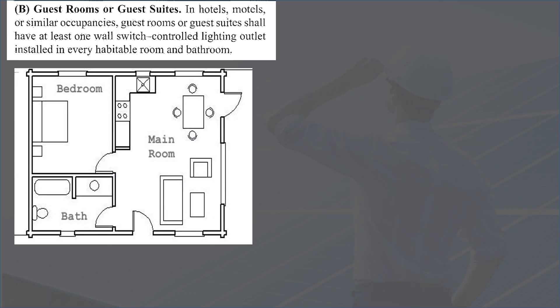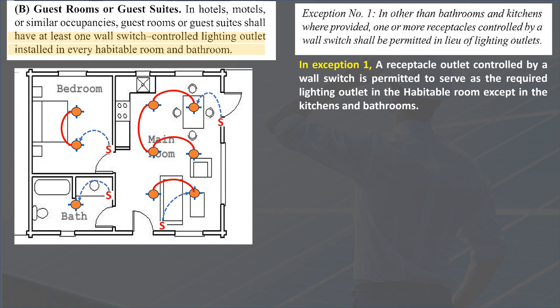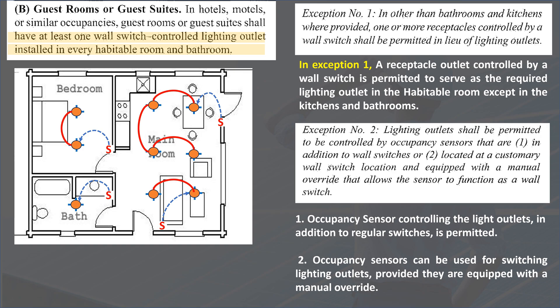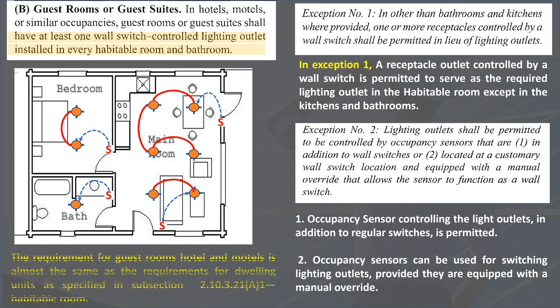For subsection 2.10.3.21(b), guest rooms or guest suites in hotels, motels, or similar occupancies shall have at least one wall switch-controlled lighting outlet in every habitable room and bathroom. Exception 1 permits a receptacle outlet controlled by a wall switch to serve as the required lighting outlet in habitable rooms, except in kitchens and bathrooms. Exception 2 permits occupancy sensors for switching, provided they are equipped with a manual override. The requirements for hotel guest rooms are almost the same as those for dwelling units.